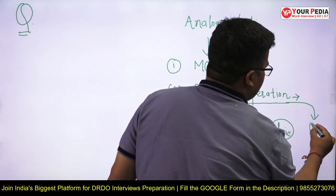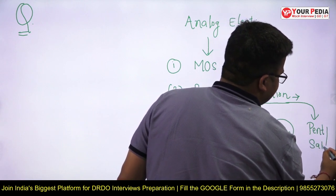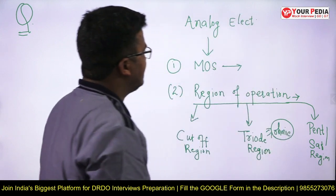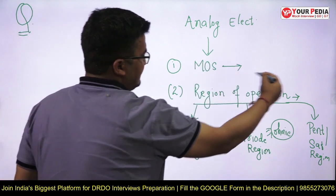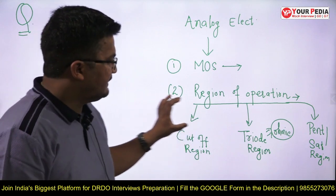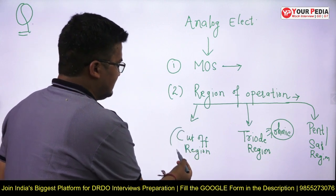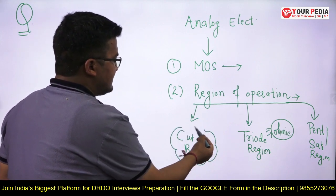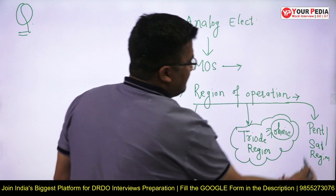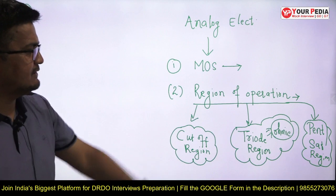Then you will come to the pentode region or saturation region. So see, the journey started from: what do you mean by MOS — its structure, terminals, and all. Second: what are the different regions of operation — cutoff region, triode region, saturation region — and the application of each: what is the application of the cutoff region for analog and digital, what is the application of the triode region for analog and digital, and what are the applications of the saturation region for analog and digital.